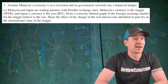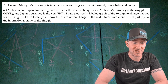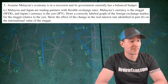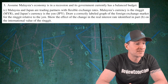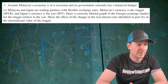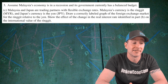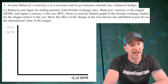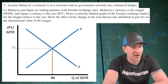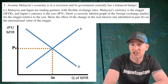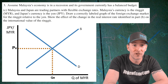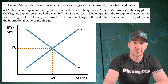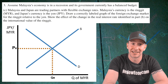For part C, we are told that Malaysia and Japan are trading partners with flexible exchange rates. Malaysia's currency is the ringgit and Japan's currency is the yen. We're going to draw a correctly labeled graph of the foreign exchange market for the ringgit relative to the yen, and show the impact of the real interest rate change on the value of the ringgit. On the x-axis we're going to have the quantity of MYR for the ringgit, and on the y-axis we're going to have the Japanese yen (JPY) over MYR. You have a downward sloping demand curve, upward sloping supply curve, mark the equilibrium exchange rate and quantity, and if you have all that, you get your first point.